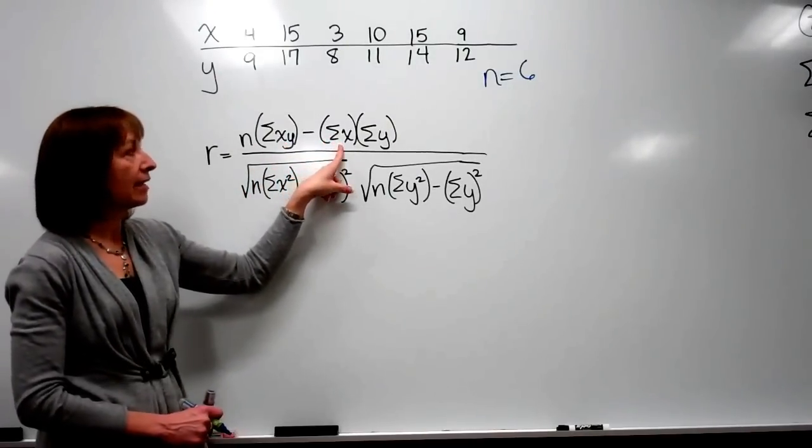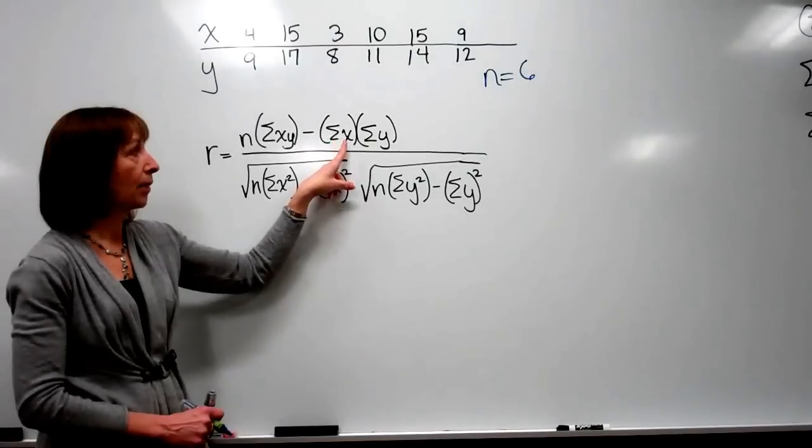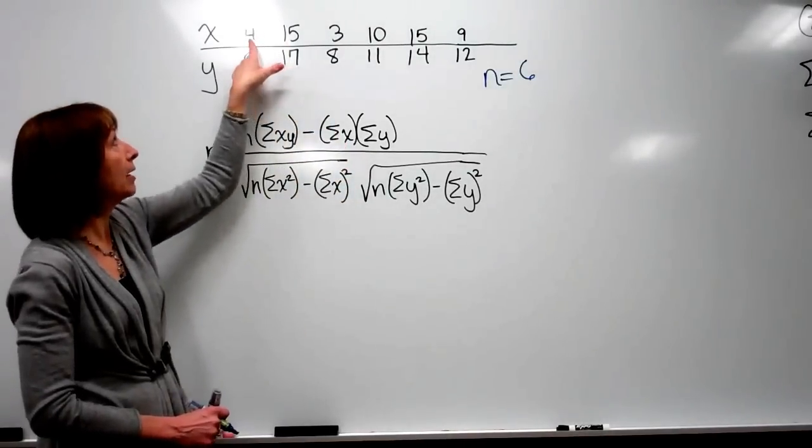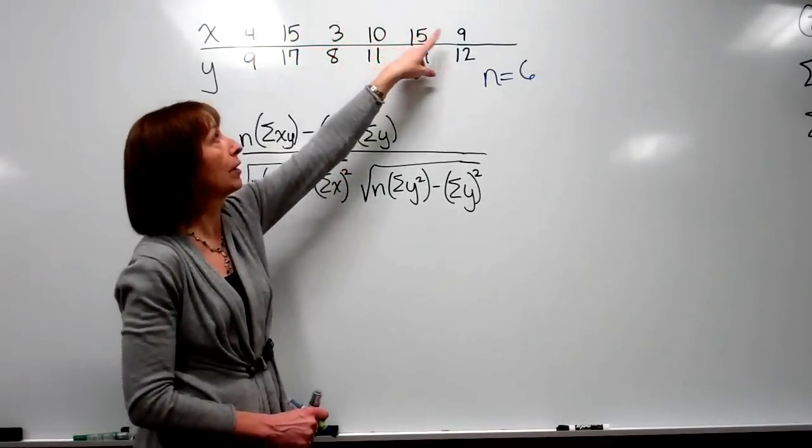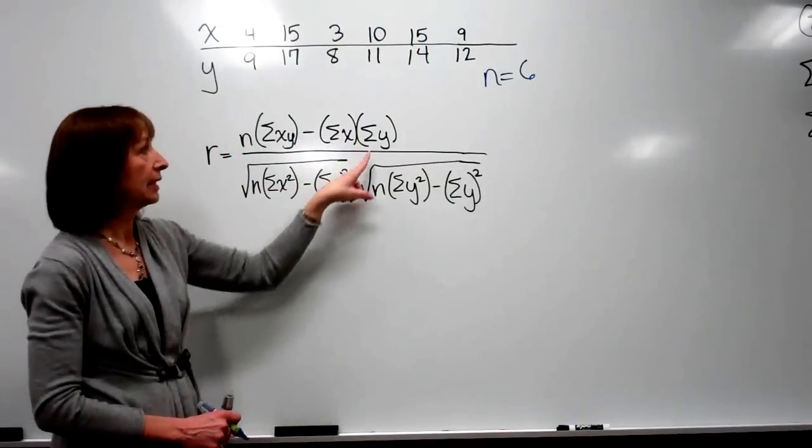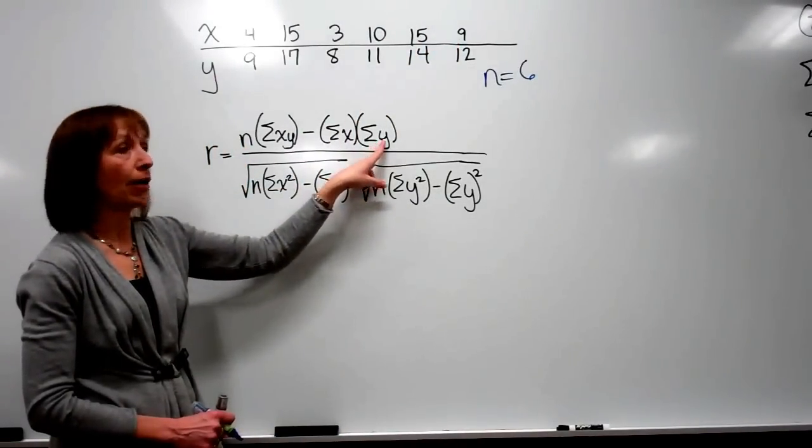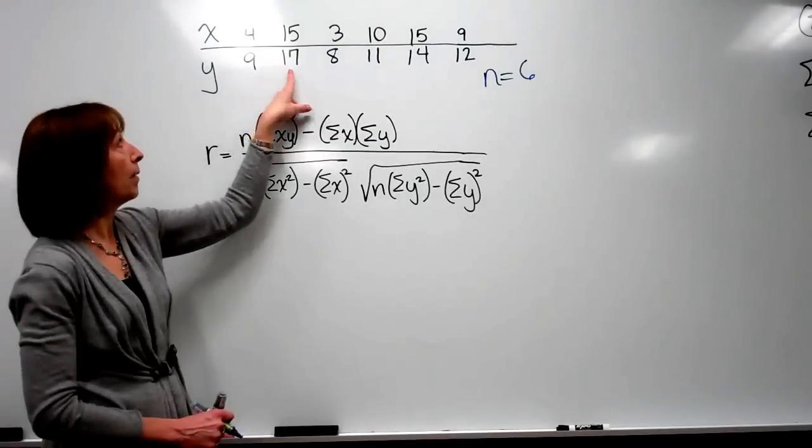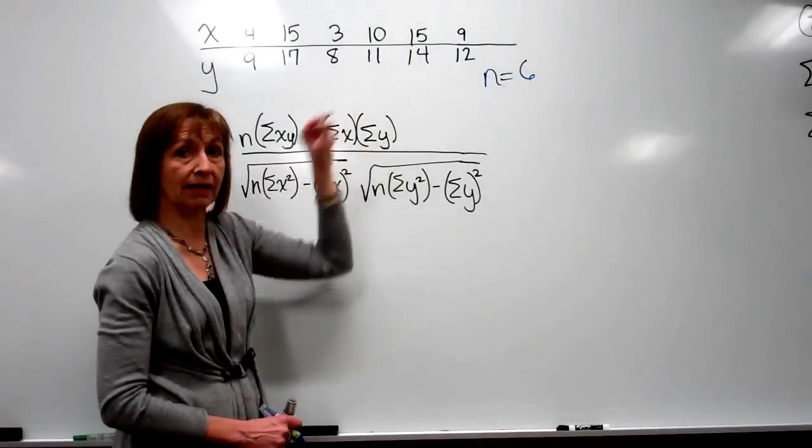In the next set of parentheses following the minus sign is to add up all the x's, so add up all the values within your independent variable. Here is to add up all the y's, so we'll add up all the values of our dependent variable.